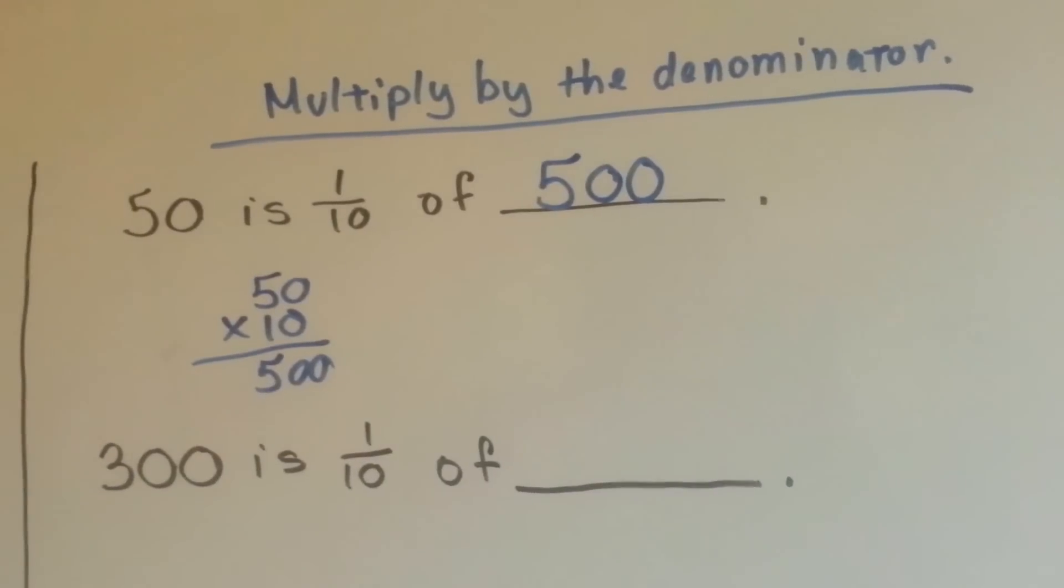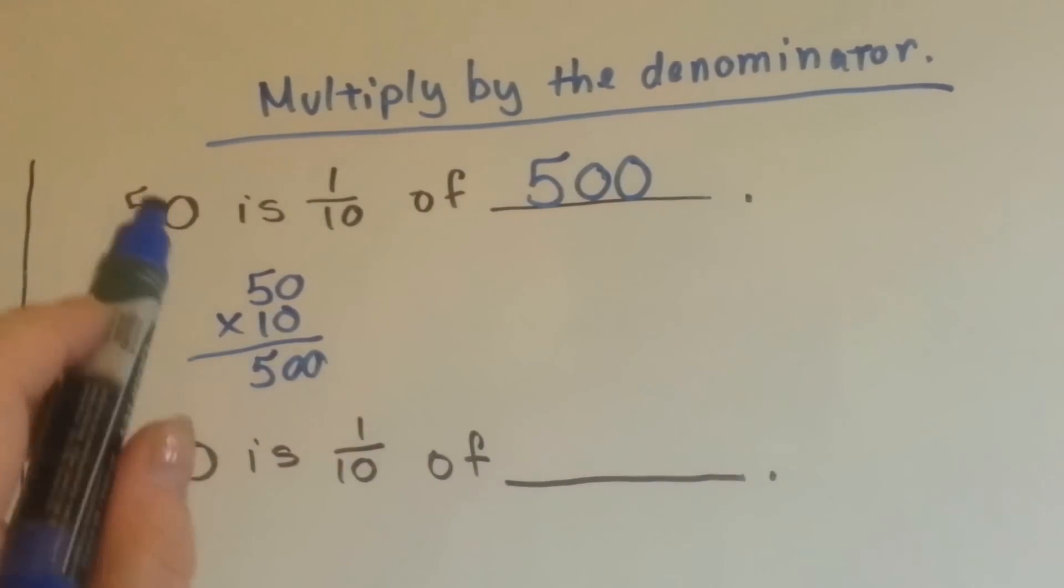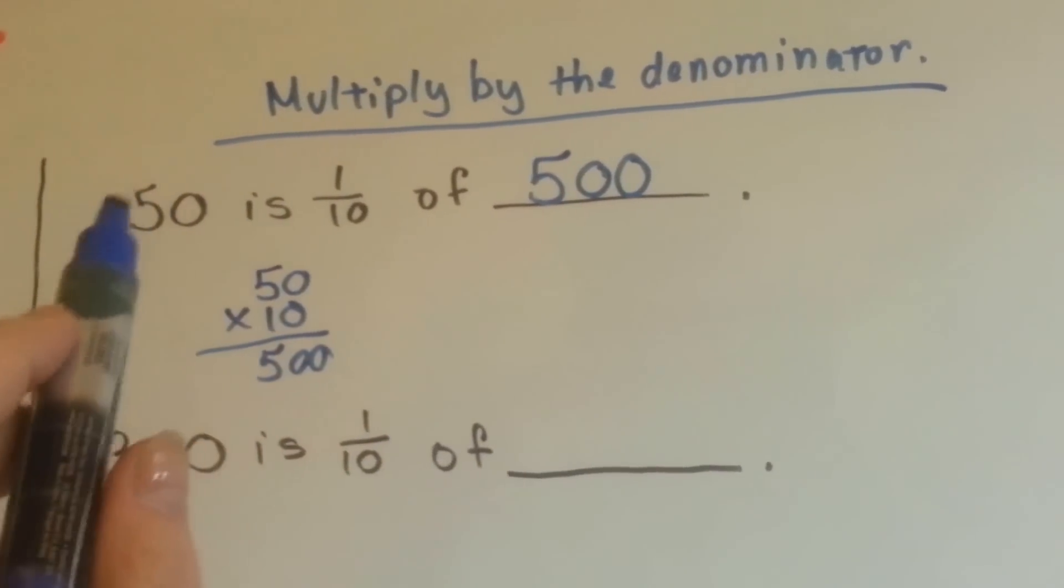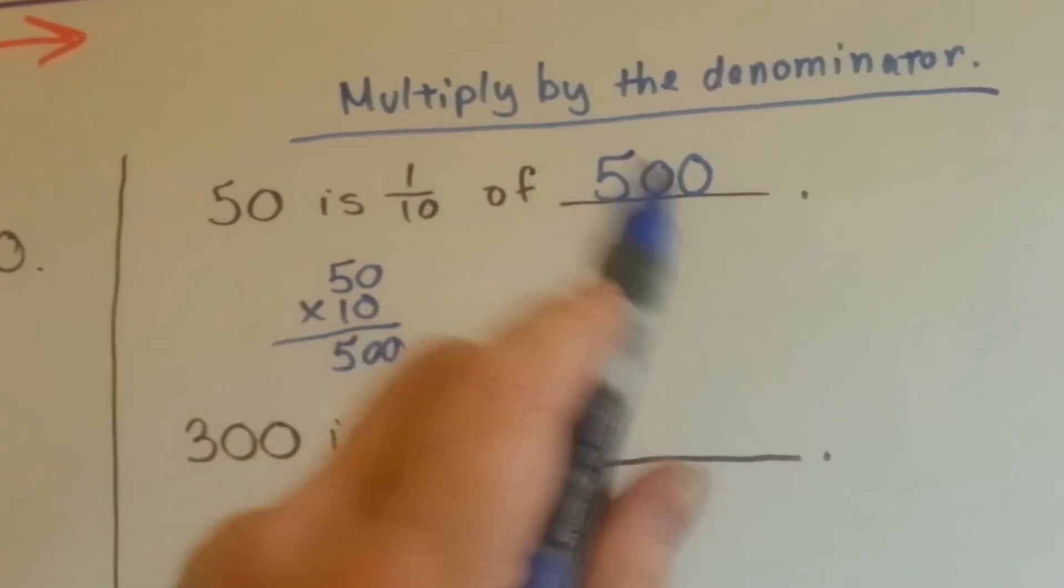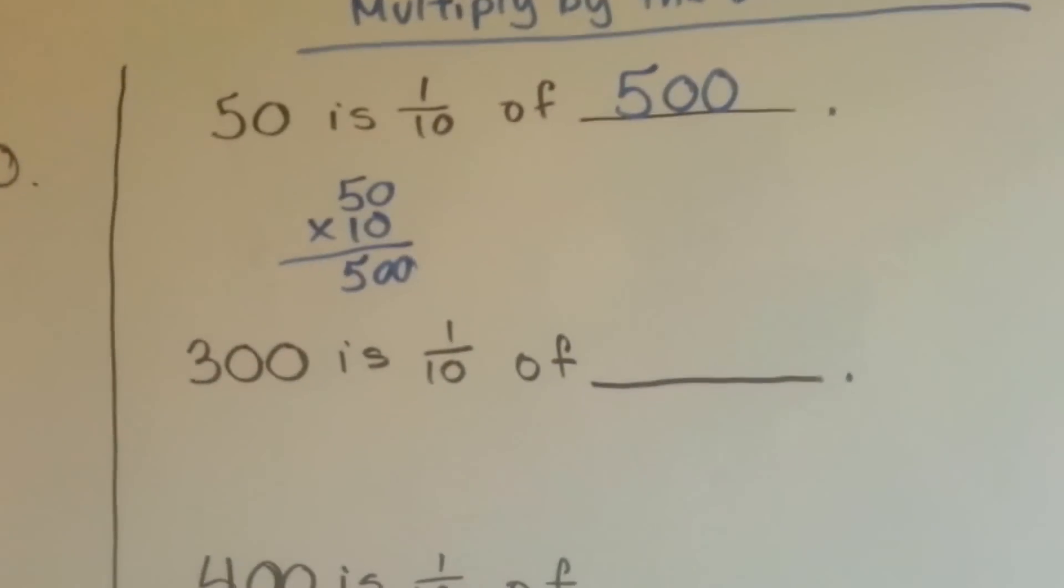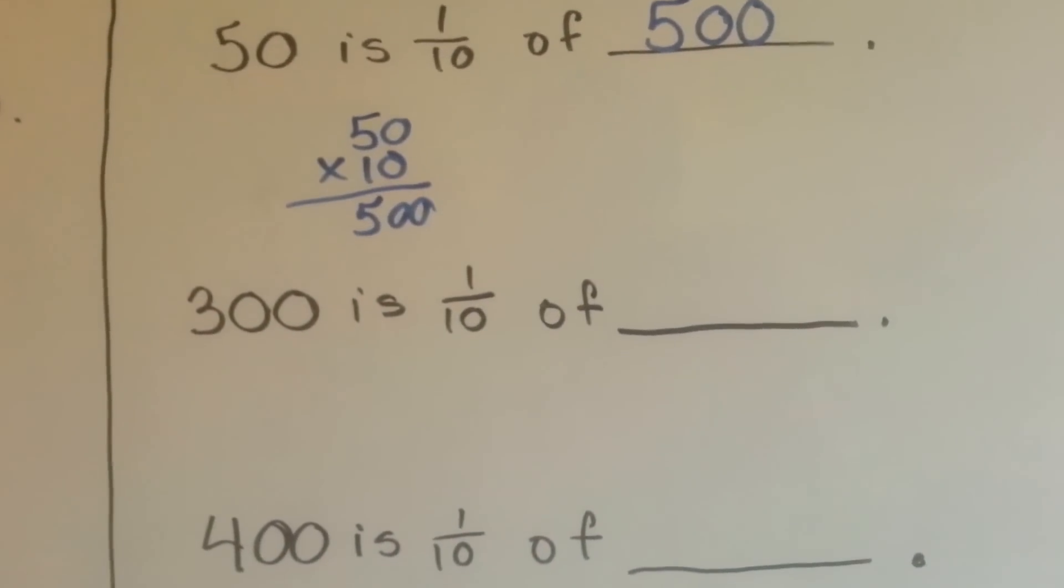But 50 is 1 tenth of 500, because 50 times 10 is 500, 500 divided by 50 is 10. See? I know this sounds really confusing, so just stay with me.